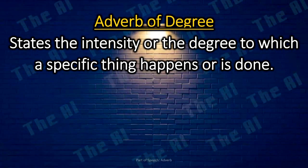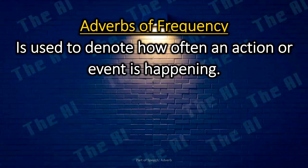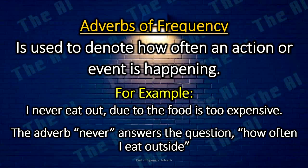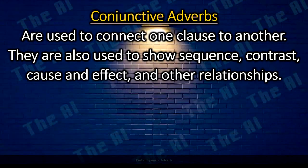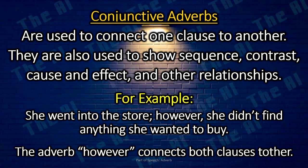Adverb of degree states the intensity or degree to which something happens. For example: The child is amazingly talented — the adverb amazingly answers the question, to what degree is the child talented. Adverb of frequency is used to denote how often an action happens. For example: I never eat out due to the food being too expensive — never answers how often I eat outside. Conjunctive adverbs connect one clause to another and show sequence, contrast, cause and effect, and other relationships. For example: She went into the store; however, she didn't find anything she wanted to buy — the adverb however connects both clauses together.